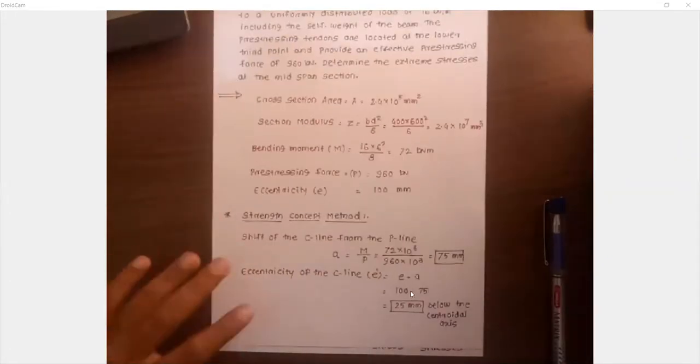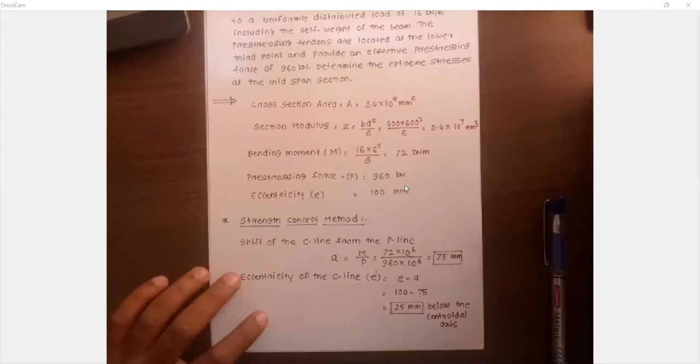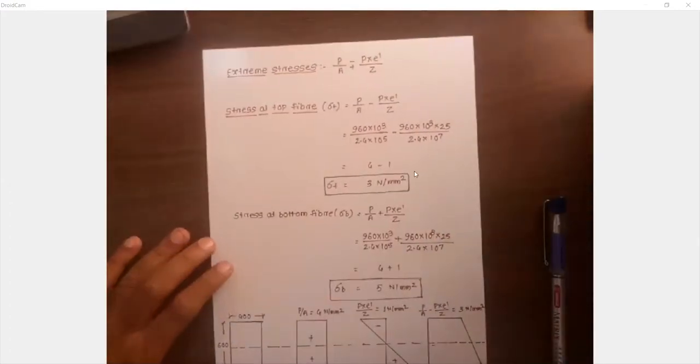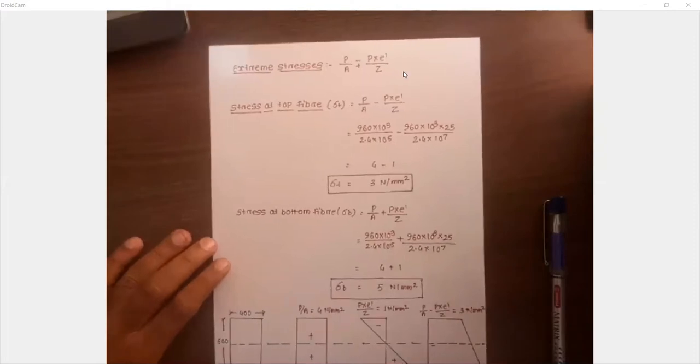How did we get the eccentricity value? The given eccentricity E = 100 mm is the distance of the tendon from the central axis. The shift between P line and C line is 75 mm. To get the eccentricity of the C line — that is, the distance of the C line from the central axis — the value becomes 100 − 75 = 25 mm.